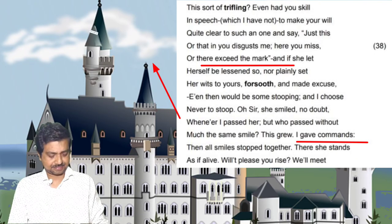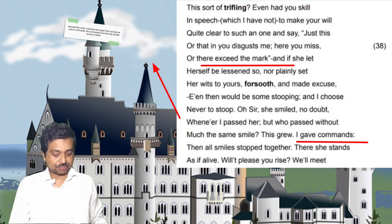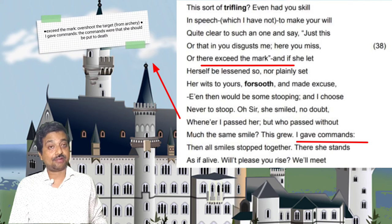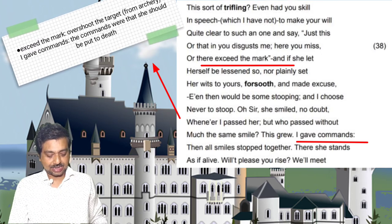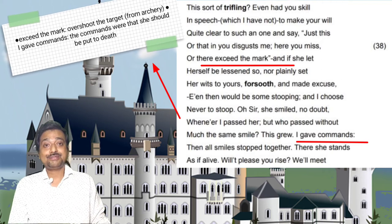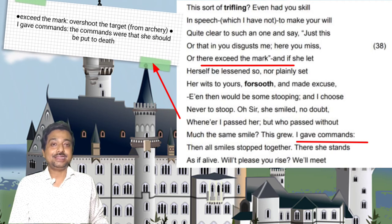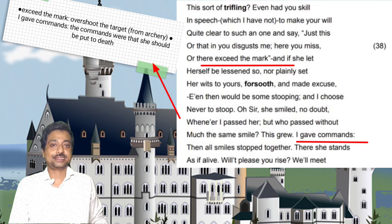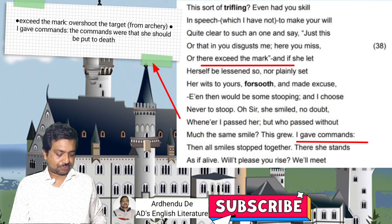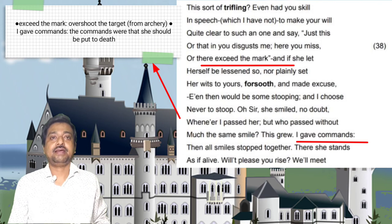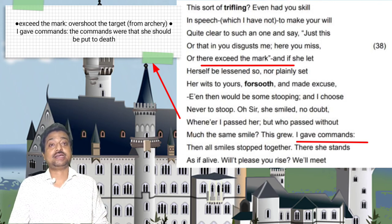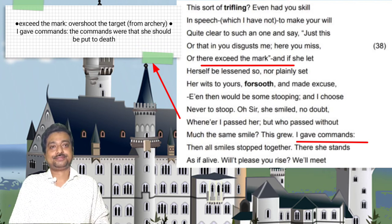'Even had you skill in speech — which I have not — to make your will quite clear to such a one, and say just this or that in you disgusts me here, you miss or there exceed the mark.' If she let herself be listened to, nor plainly set her wits to yours for such, and met excuse — even then would be some stooping, and I choose never to stoop. 'Oh sir, she smiled no doubt whenever I passed her, but who passed without much the same smile?' This grieved me. 'I gave commands. Then all smiles stopped together. There she stands as if alive.'